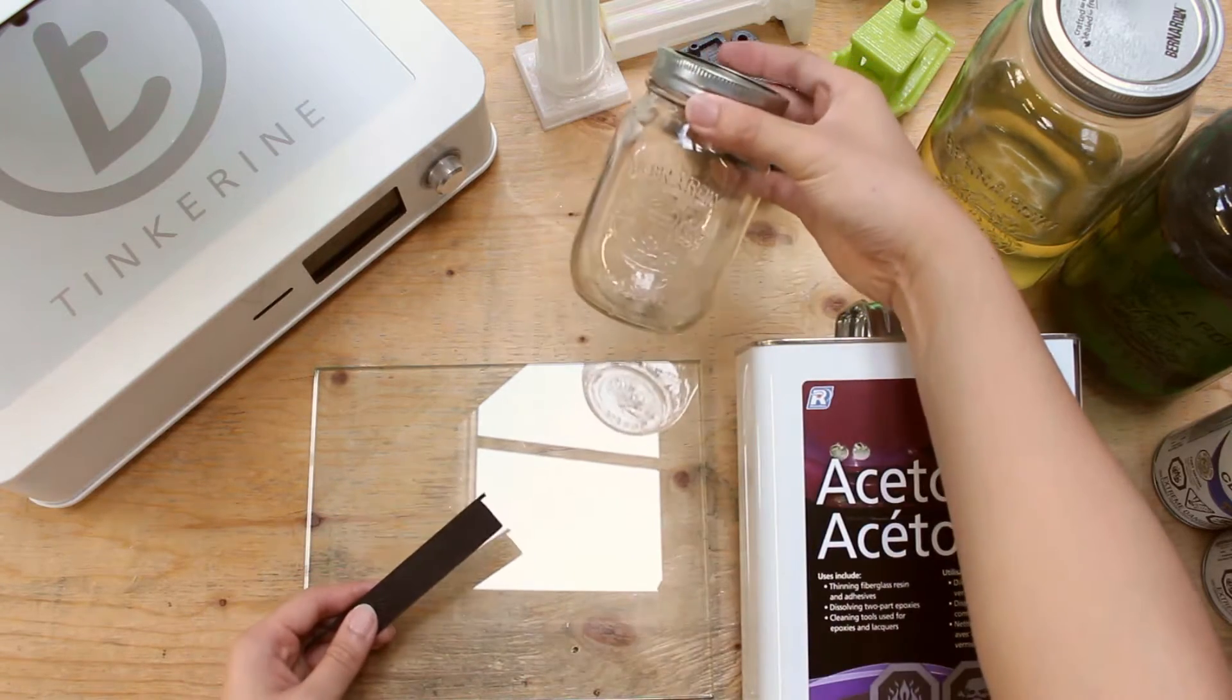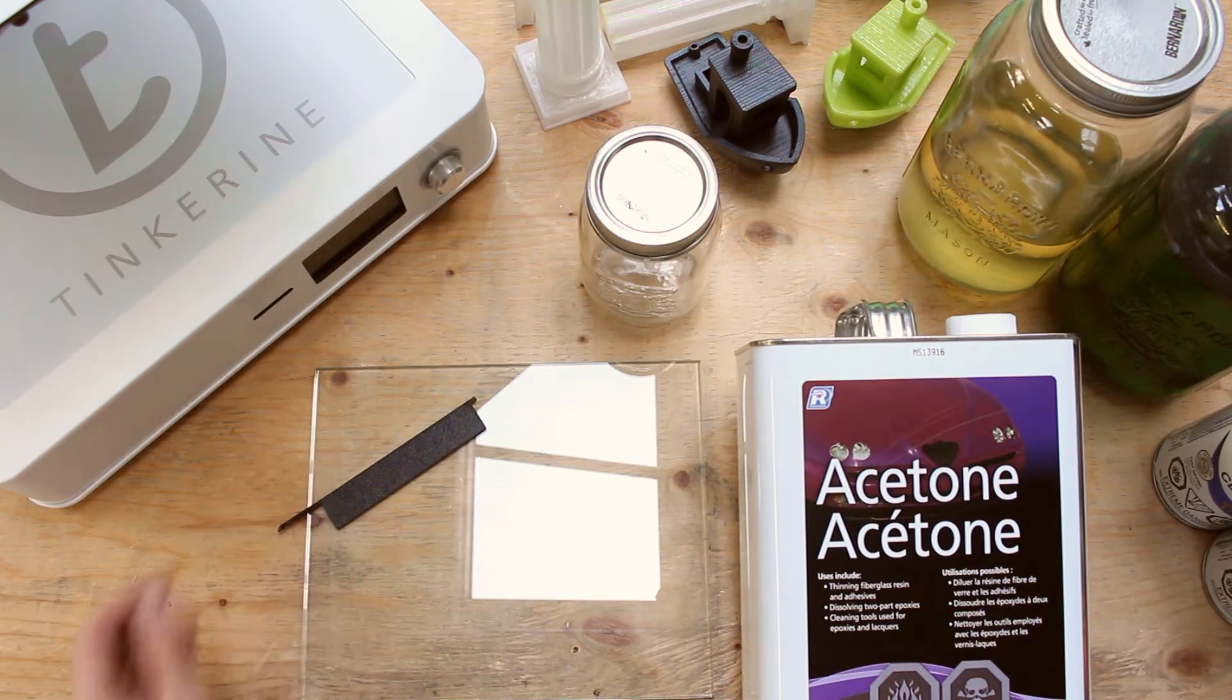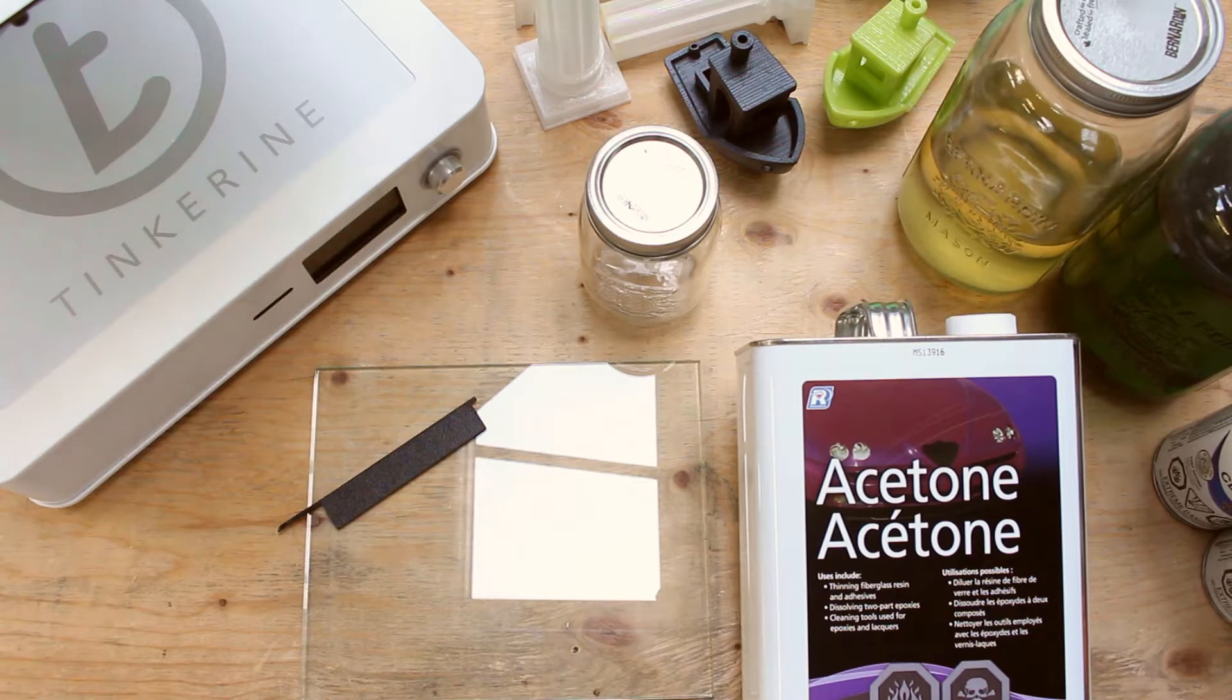People suggest to make ABS sludge because ABS sticks well to each other and keeps their print from curling, and they could also reuse the scrap from their ABS printer. Today we are going to see if it works on PLA as well.